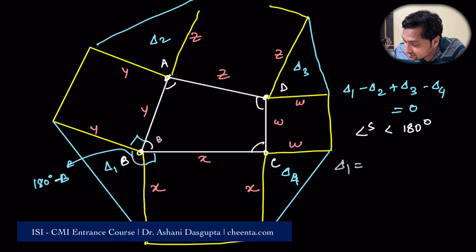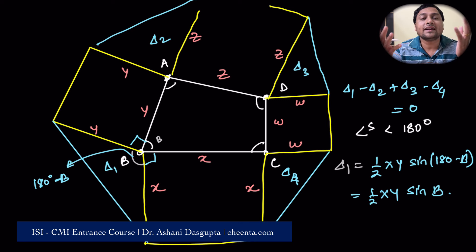the area of delta 1 is half xy sin of 180 minus b, which is same as half xy sin b. Sine of 180 minus b is sin b, because, and this is where we use it, and this is the conceptual point. This is because b is less than 180 degrees, so 180 minus b is a positive angle. It could be an obtuse angle as well, but it's a positive angle, it's an acute or an obtuse angle, so 180 minus b, this angle will be a first quadrant angle or a second quadrant angle, so sin will be positive. That's the reason we are using all the angles to be less than 180 degrees. Okay. So half sin b, that is the area of delta 1.